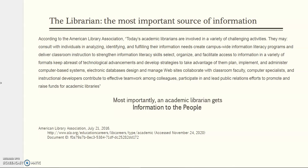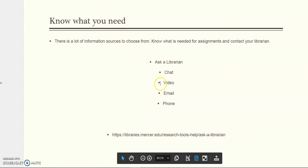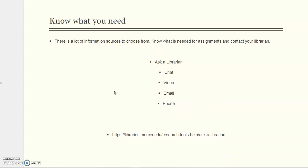Here we are at the end. The most important source of information is in the library. We can read what a librarian does according to the American Library Association, ALA. An academic librarian gets information to the people. So if you get stuck or you don't know a type of information — whether you need qualitative or quantitative information, or if it's primary or secondary — go to your librarian and they will help you. Know what you need, know what is needed for your assignments, and contact your librarian. At the bottom is the URL and all the ways we can offer help, including research consultations. That is how you discern types of information.